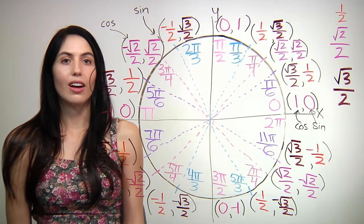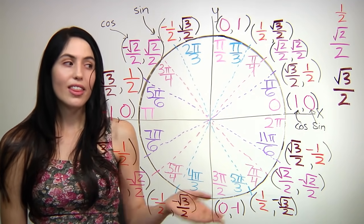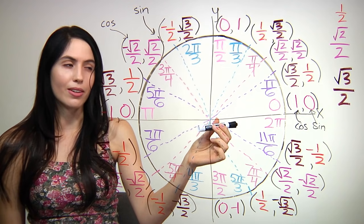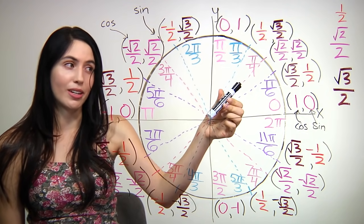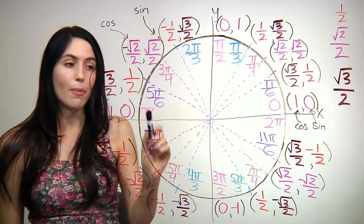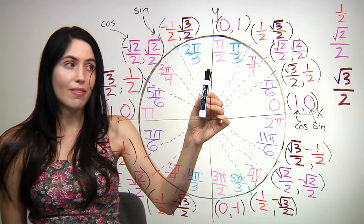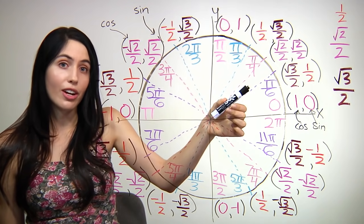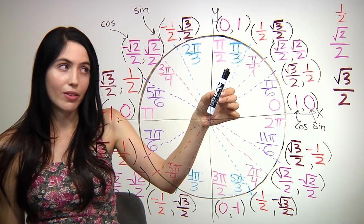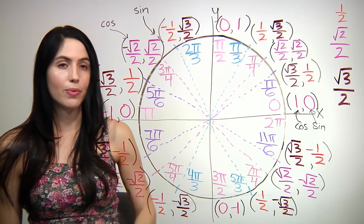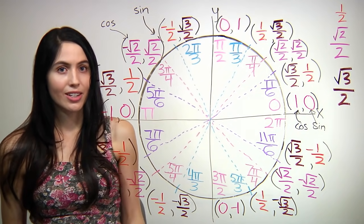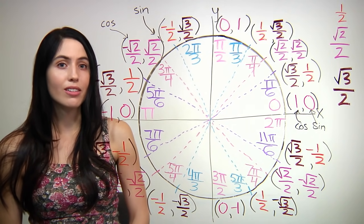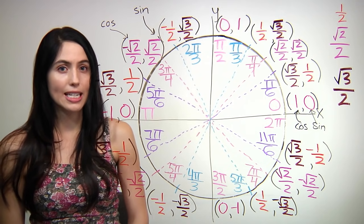Just a few reminders: this whole time we were working in radian angles — pi over 6 and so on are all radian angles. You may need to work in degrees, and all of them have a corresponding degree angle. You might already know that pi is 180 degrees, so pi over 2 is 90 degrees, 0 is 0 degrees, pi over 6 is 30 degrees, pi over 4 is 45 degrees, pi over 3 is 60 degrees, and so on. If you're trying to memorize the unit circle, just remember the patterns, because those patterns are what will make it a lot faster and easier to learn.